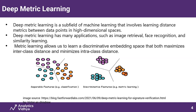Deep metric learning addresses exactly this issue. It solves the problem by learning the similarity between images in the embedding space such that similar images will be together and dissimilar images will be further apart. As you can see in this figure, the classification model learns separable features, while discriminative features are learned by deep metric learning such that similar images are together and dissimilar images are further.